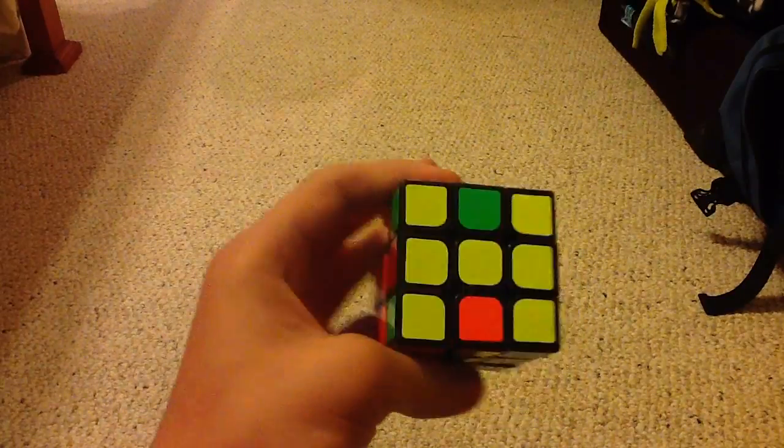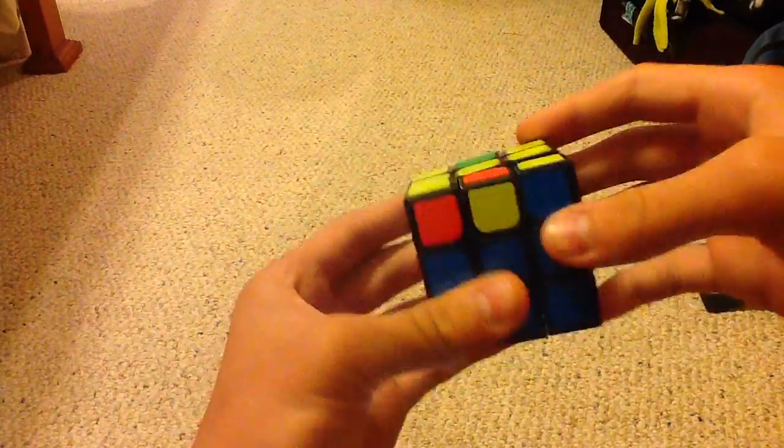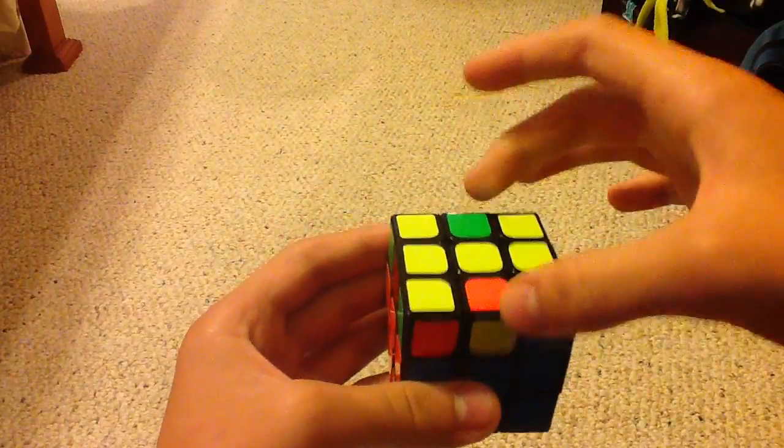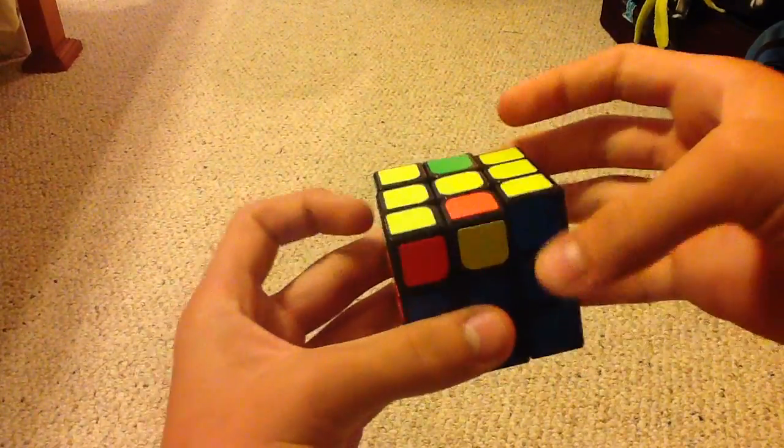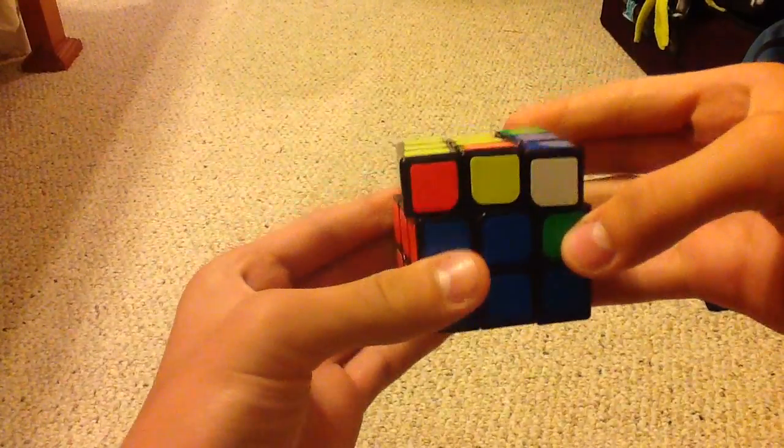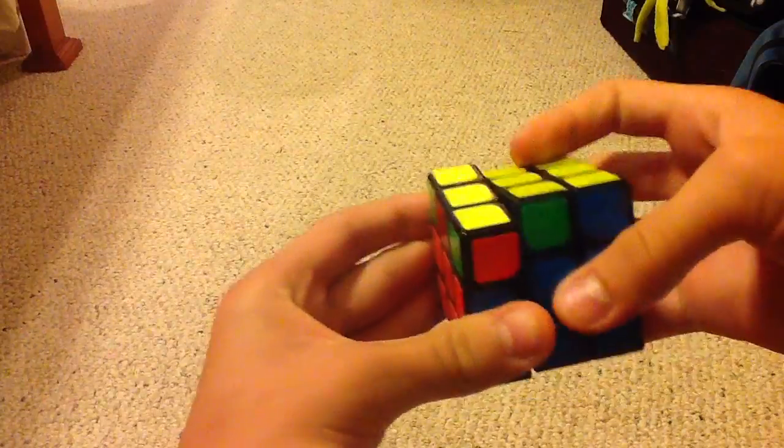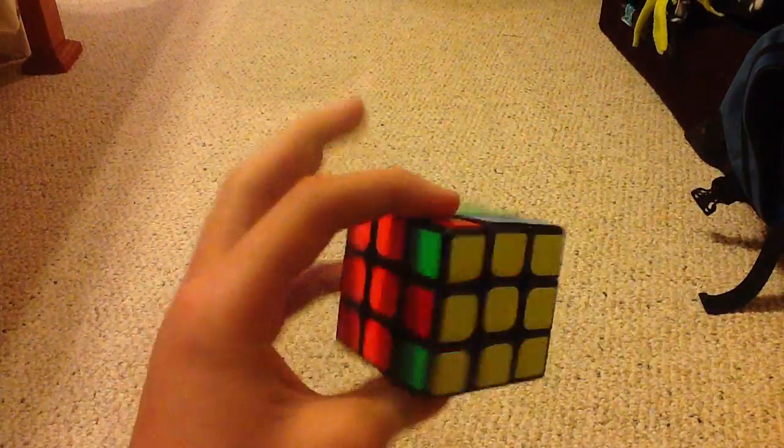The other way to do this algorithm is with the line OLL. This is what it looks like if you were to solve it, but it just orients these two. And the algorithm is R U R' U' M U R U' R'. And that basically just orients these two edges.